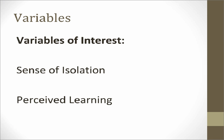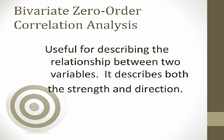As you can see from both the research question and the null hypothesis, we are considering two continuous variables: the scores on the sense of isolation measure, as well as the scores on the sense of perceived learning measure. Thus, it's appropriate for us to conduct a Pearson product moment coefficient, because it's designed to test the relationship between two interval level or continuous level variables. By conducting the Pearson's product moment coefficient, we can determine both the strength as well as the direction of the relationship between the two variables.